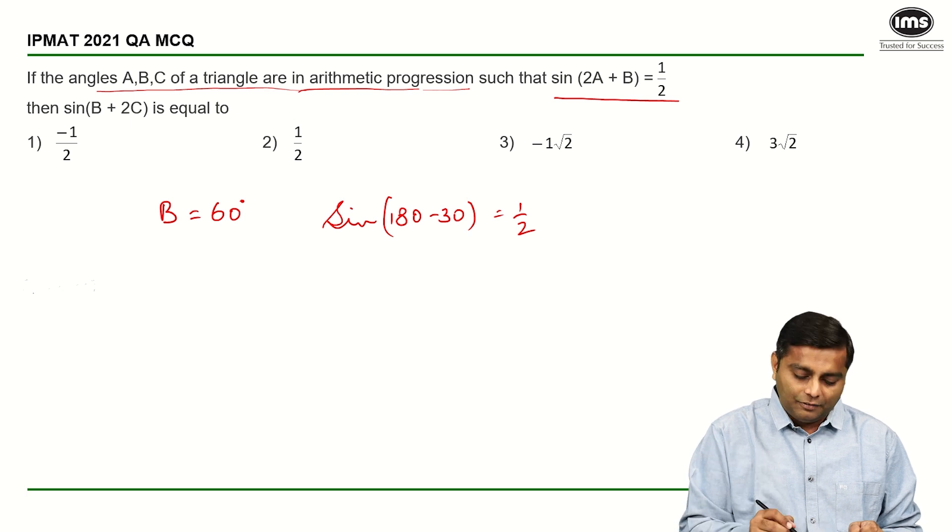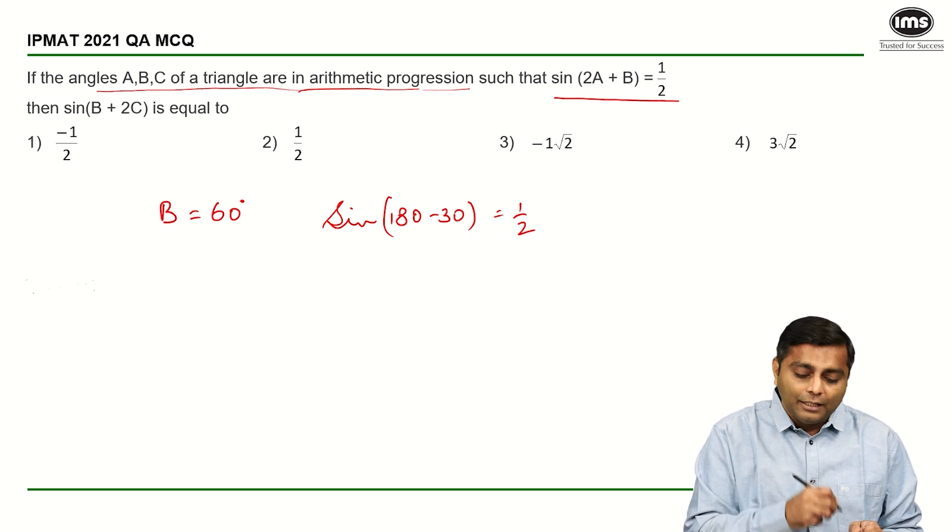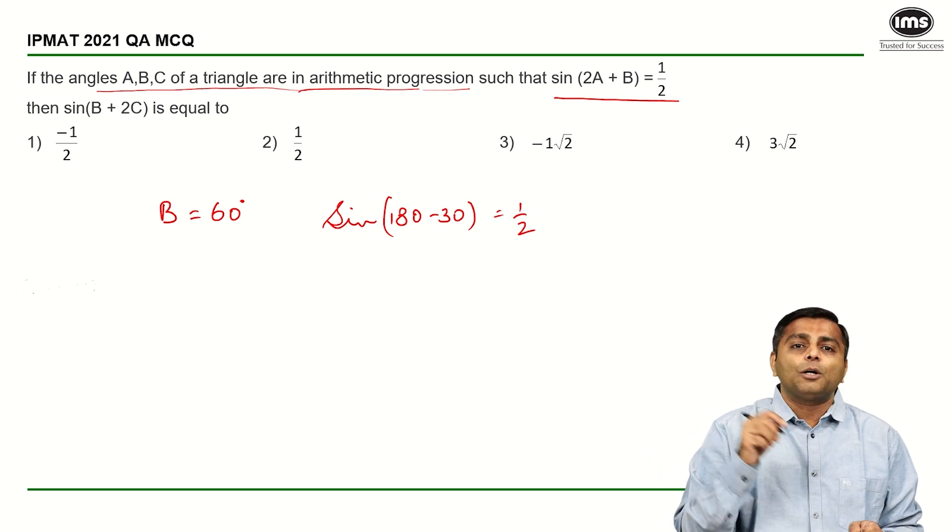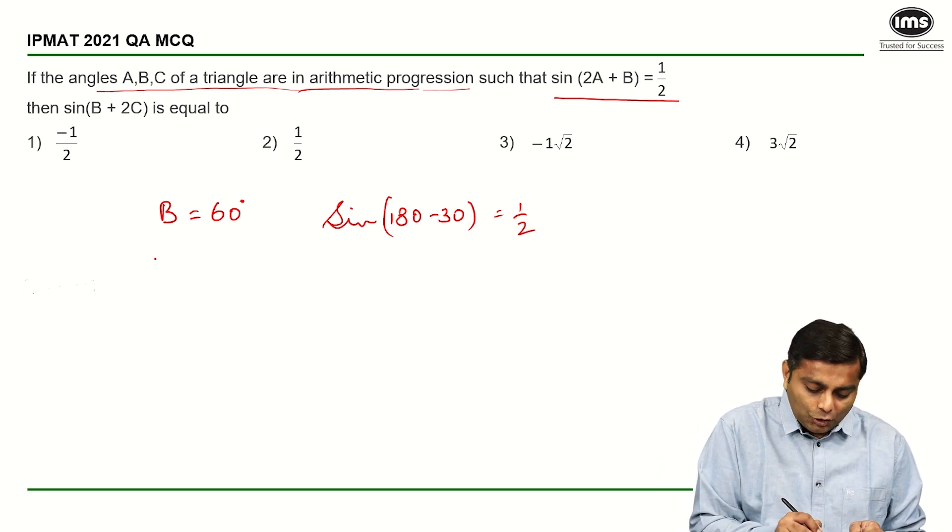So it's half, sine of 150. So 2A plus B is 150, out of which B is 60, so 2A is equal to 90 degrees and therefore A should be equal to 45.